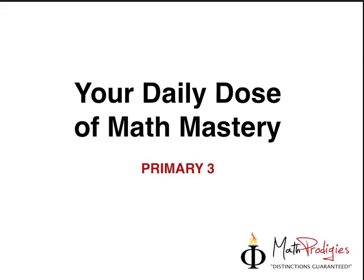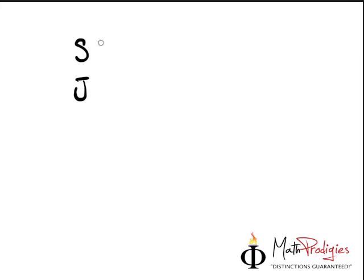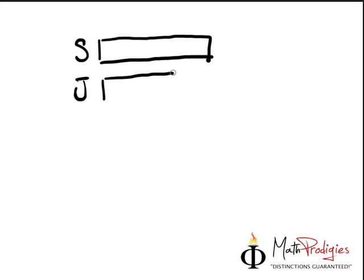So how does that look in terms of a model? This is how it's going to look. This is Sammy and this is Jonathan. Sammy has $48. Now, in order for Sammy to have $28 more, you draw one long bar like that, then you draw something like that. You can say this portion is $28. You need to find out what these amounts are first.